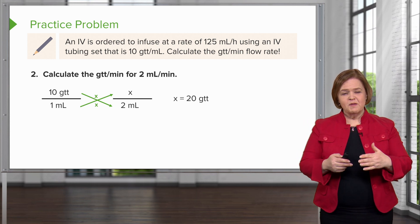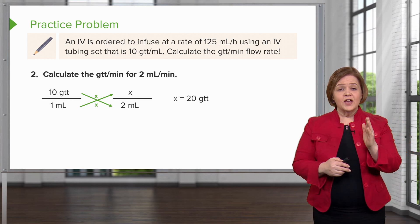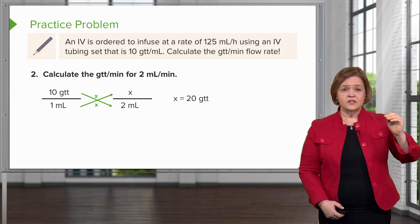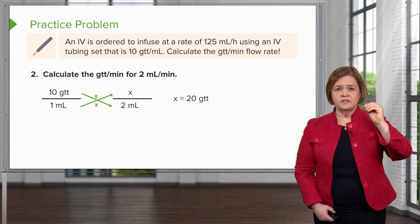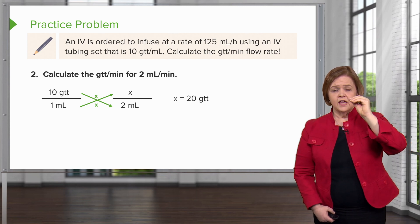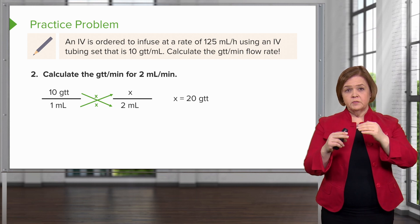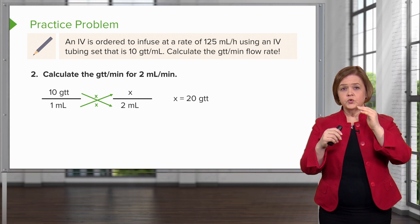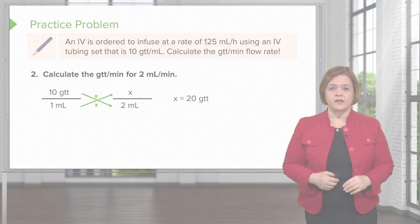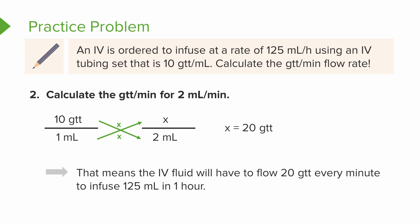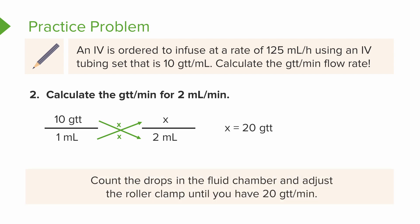So I need 20 drops per minute to achieve 125 milliliters per hour. Let's review: we looked at the tubing - 10 drops per milliliter. How many drops for 2 milliliters in a minute? We cross multiply and get x equals 20. The IV fluid will flow 20 drops every minute to infuse 125 milliliters in an hour.